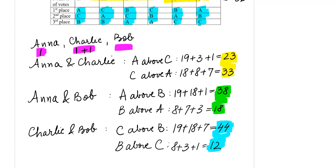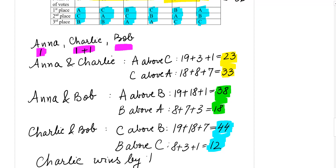So the winner by the Pairwise Comparison method is Charlie. Charlie wins by pairwise comparison.